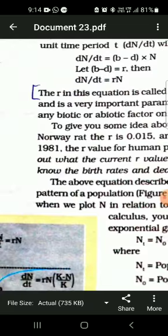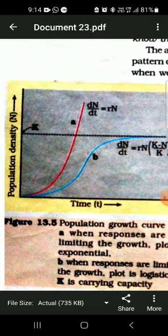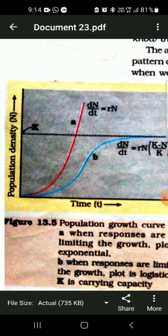One is the exponential growth and the other one is the logistic growth. Here is the diagram in your book, figure number 13.5, and this is a graph represented by x-axis and y-axis. The x-axis is representing the time and the y-axis is representing the population density represented by capital N. Here you can see two curved lines, one is in red color and the other one is in blue color. The red line color is denoted by A and the blue color line is denoted by B. A is denoting the exponential growth and B is denoting the logistic growth.